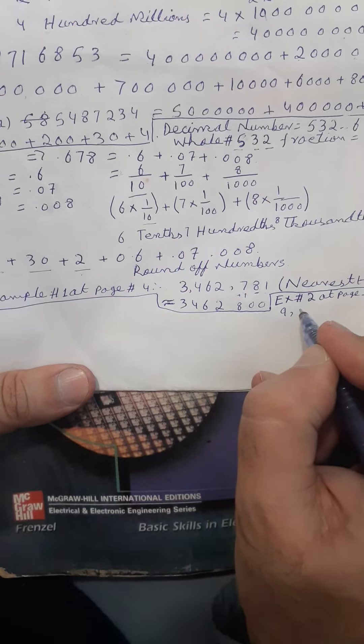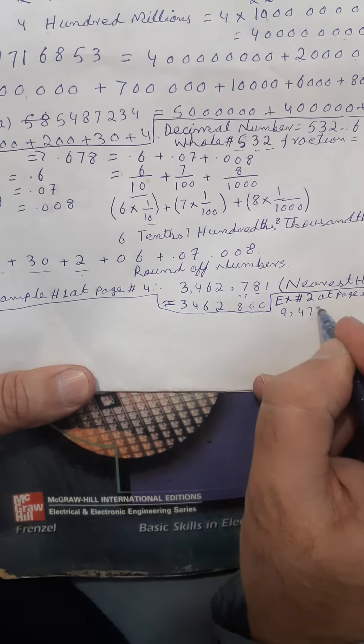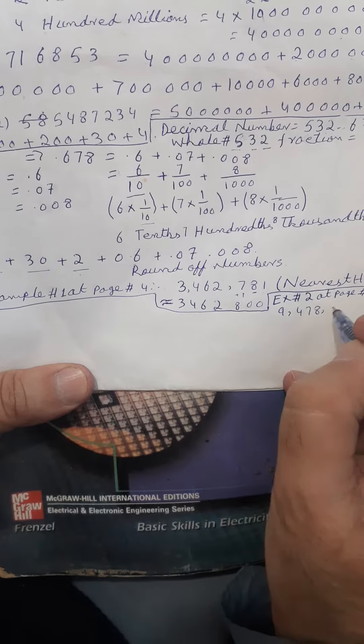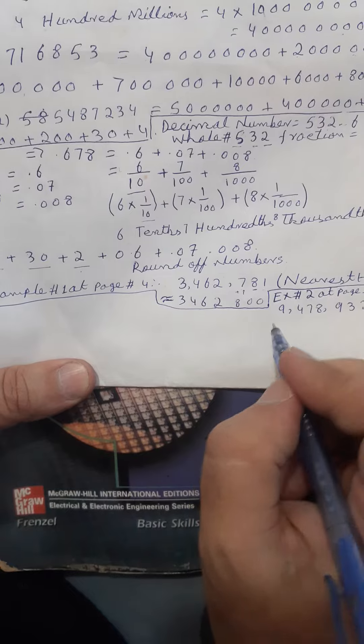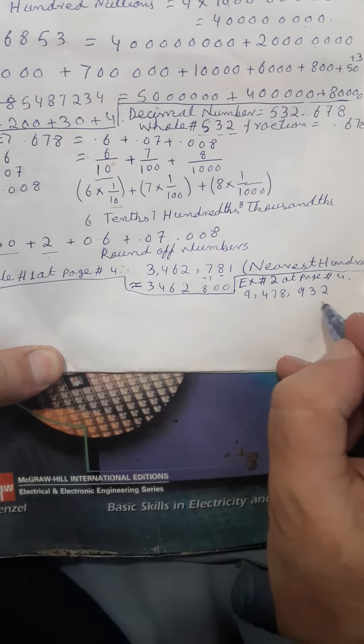It's nine, four, seven, eight, nine, three, two. If you look at the number, you have to read about 1,000 words.